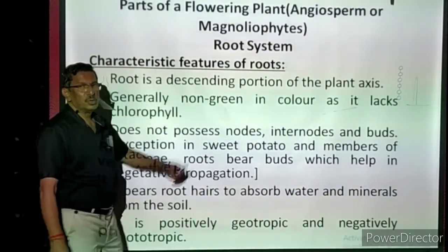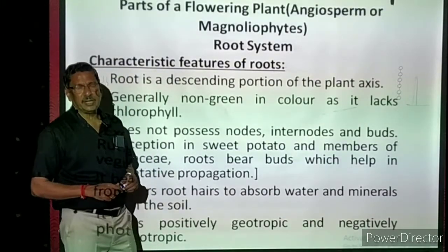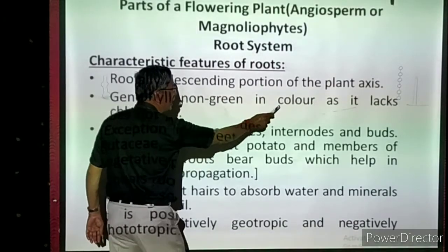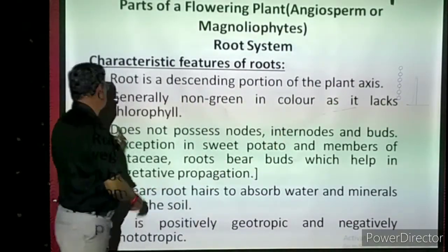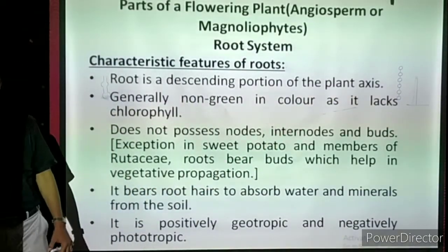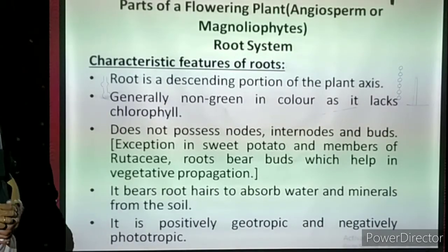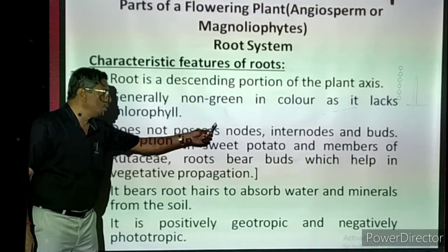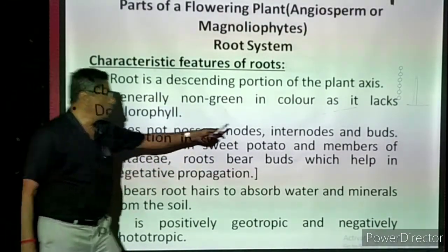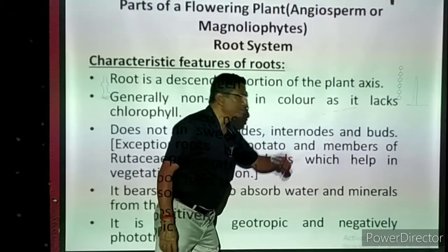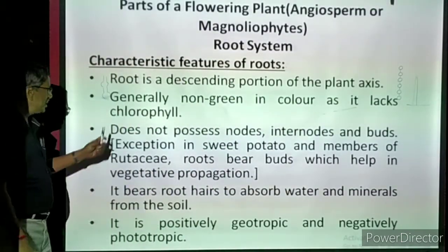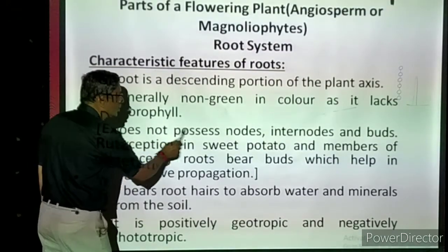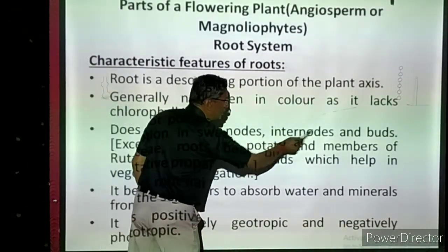Generally, roots are non-green in color because they lack chlorophyll. Roots do not possess nodes, internodes, or buds — though there are occasional exceptions. Generally, the root does not possess nodes, internodes, and buds.